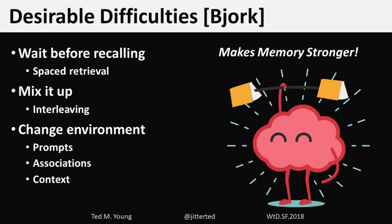Related to this is the idea of desirable difficulties. We want that attempt to retrieve to be hard, because if it's easy, they're not improving. That's why there's the metaphor of your brain as a muscle — if I can lift 10 pounds easily and keep doing that, I'm not building more muscle. So you either repeat more often or go to heavier weights. The equivalent in retrieving information is allowing yourself to forget a little bit. There's a forgetting curve — the longer you let it go before trying to retrieve, the harder it is. But if you were able to retrieve it, that connection is now much stronger.